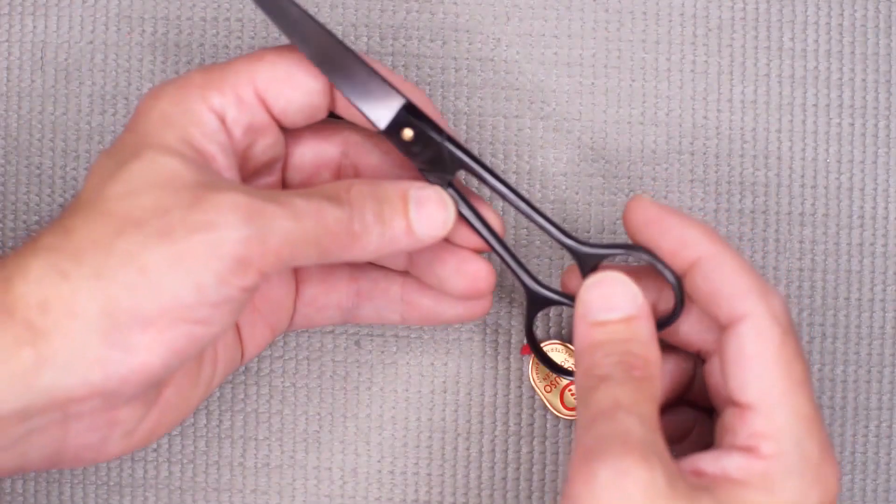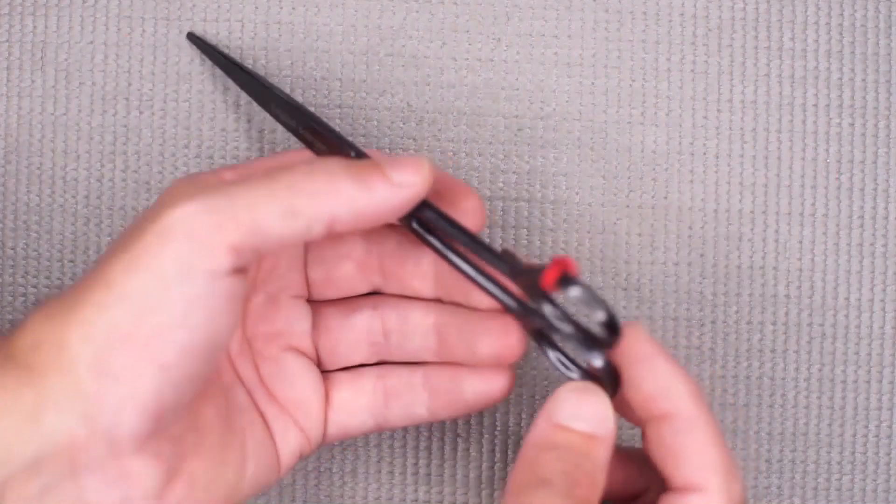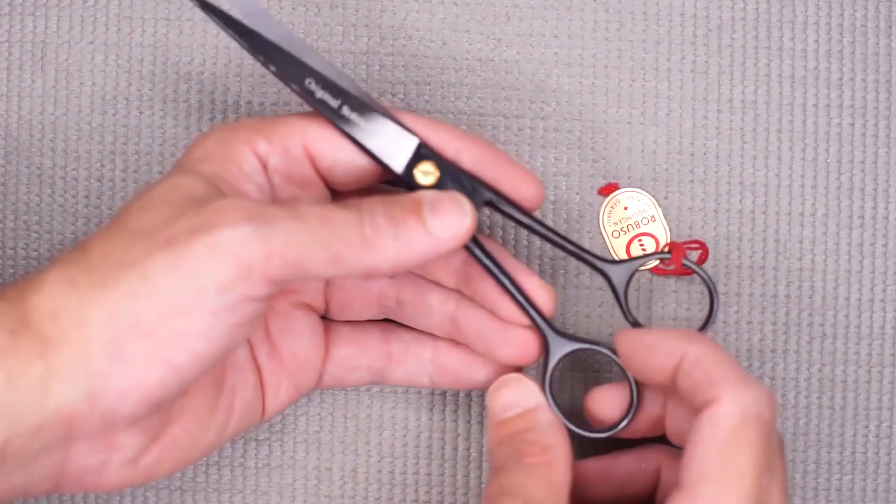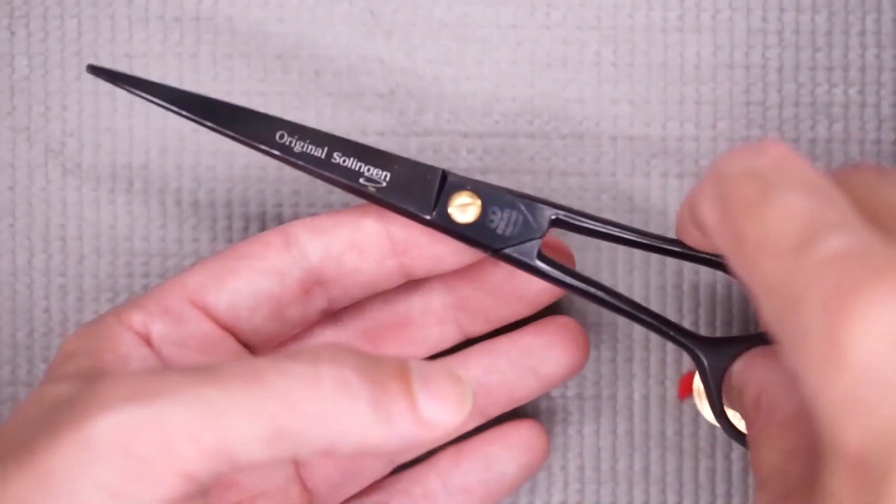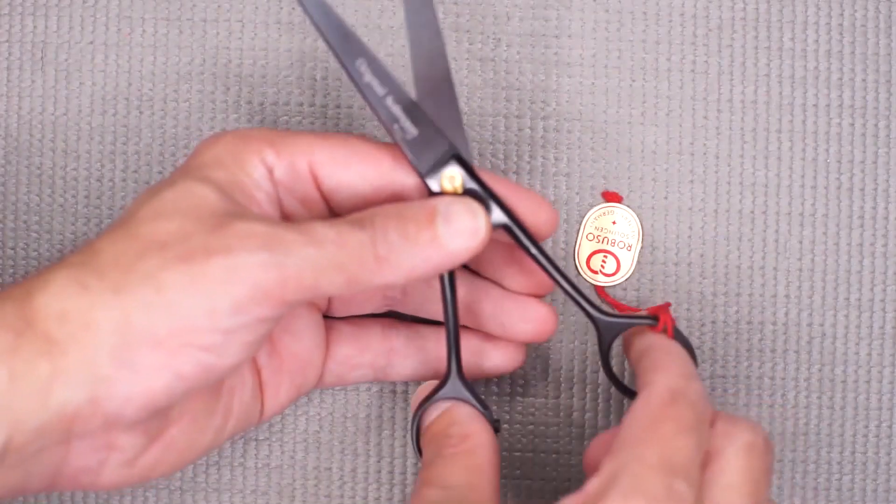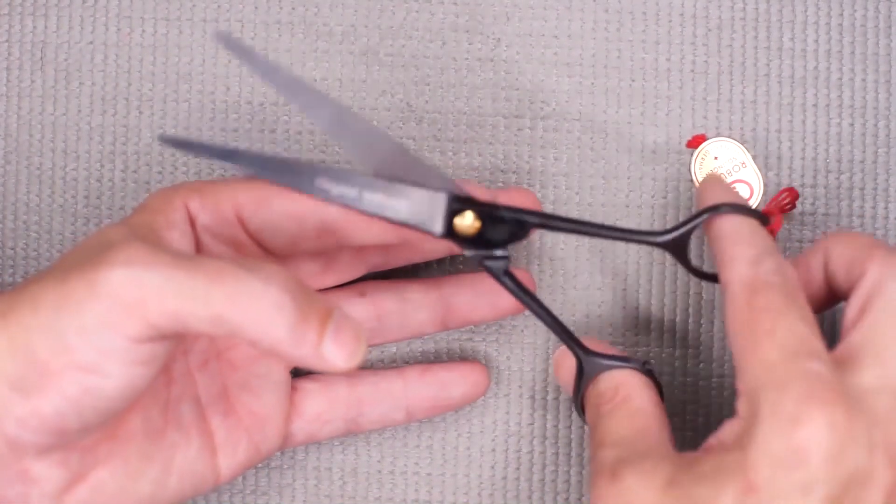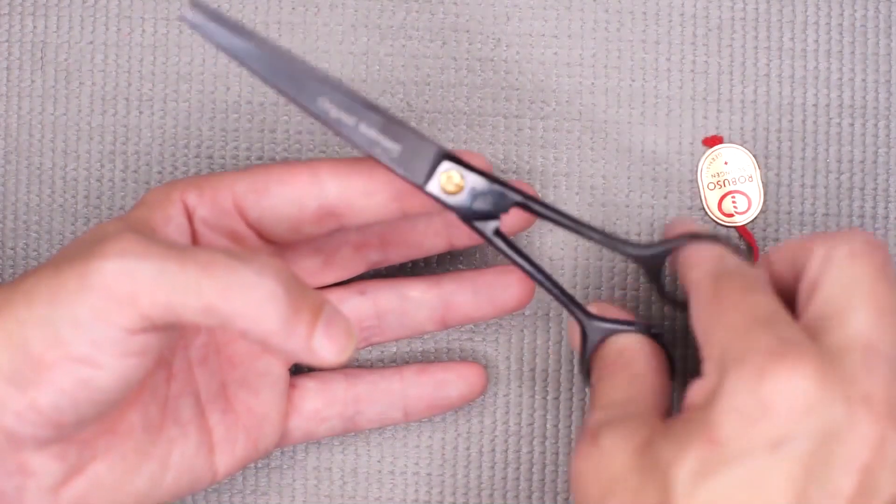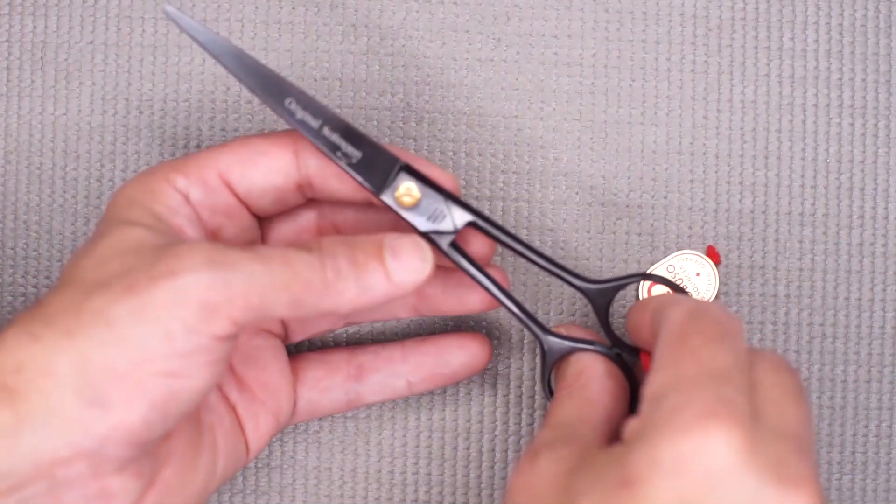Original Salingen. No ring, no finger rests, no holes for finger rests, just a rubber bumper, and you hold it as a righty like this. Listen to that scissor run.